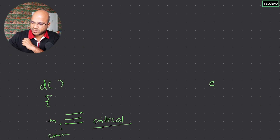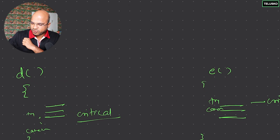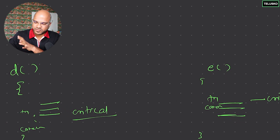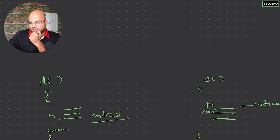Let's say we have one more method called `e`, and in this method there is also one critical statement — say the very first statement — which needs to be put in try-catch. So we have two methods, `d` and `e`, both containing a critical statement. Of course, it makes sense to write try-catch inside each method, but we also have another choice.